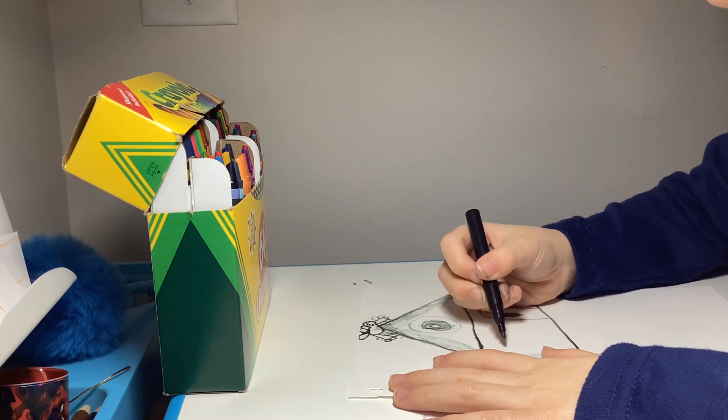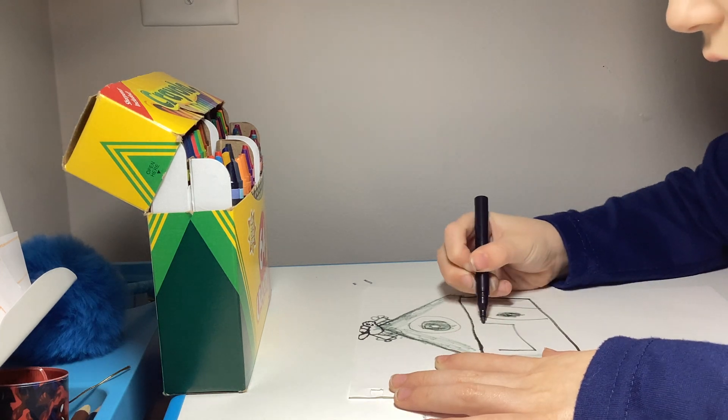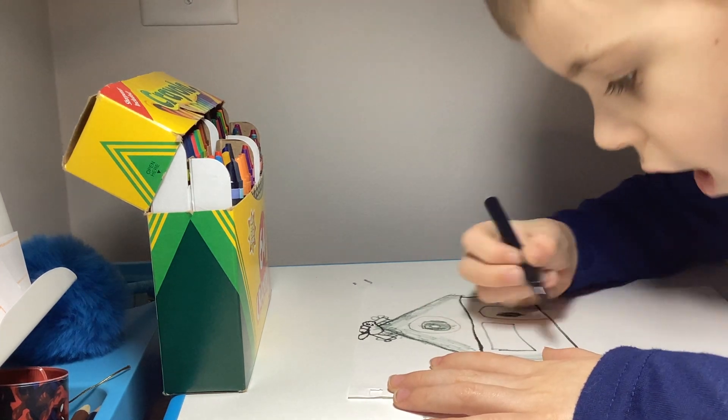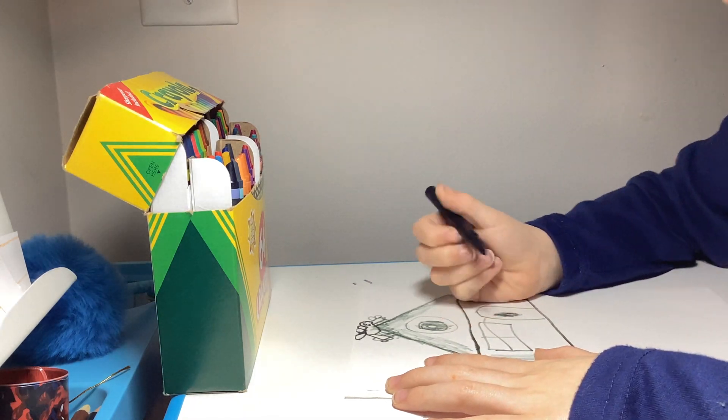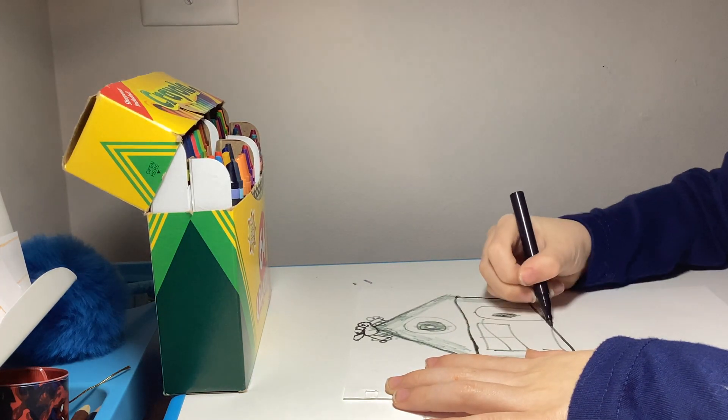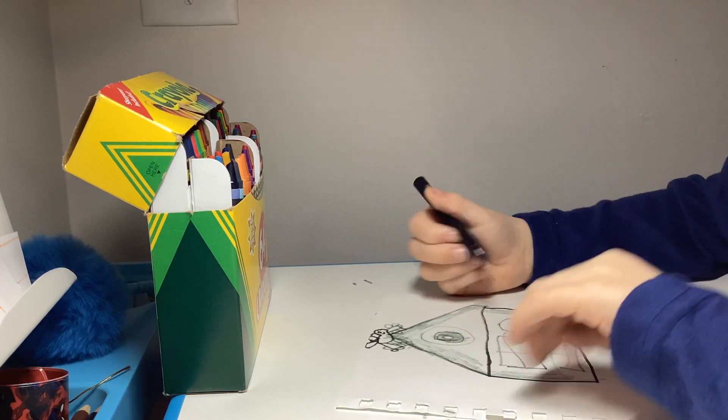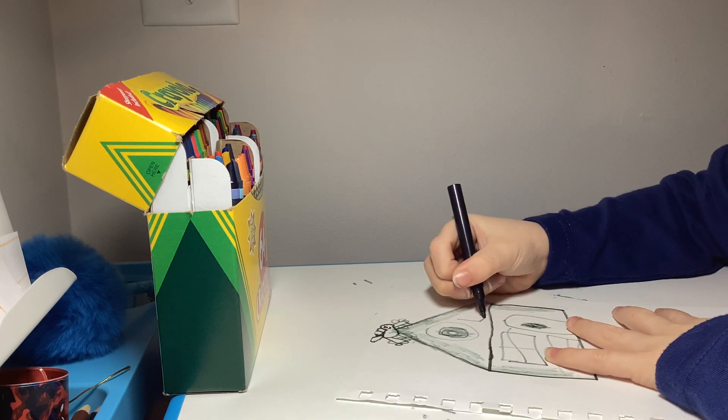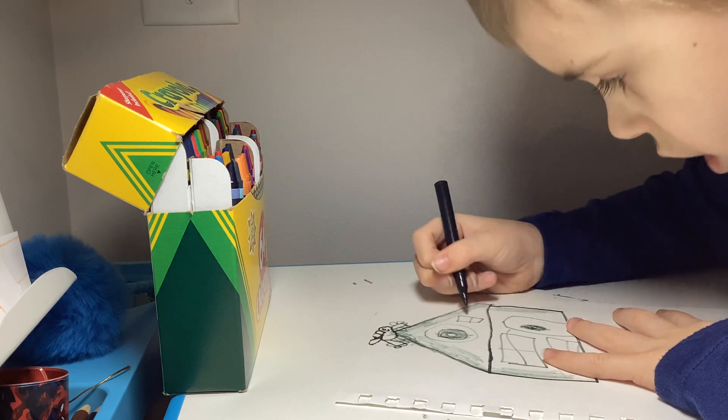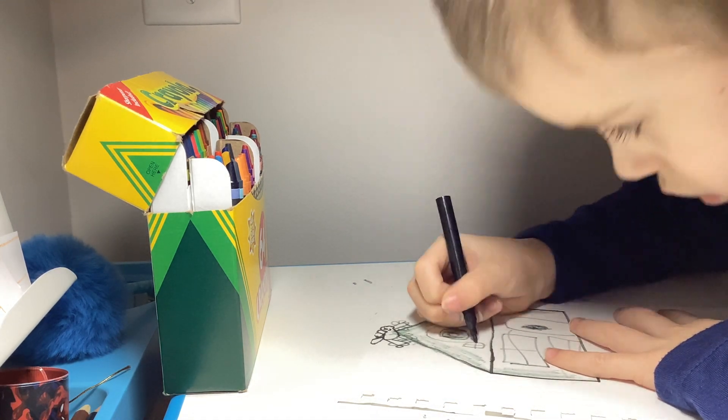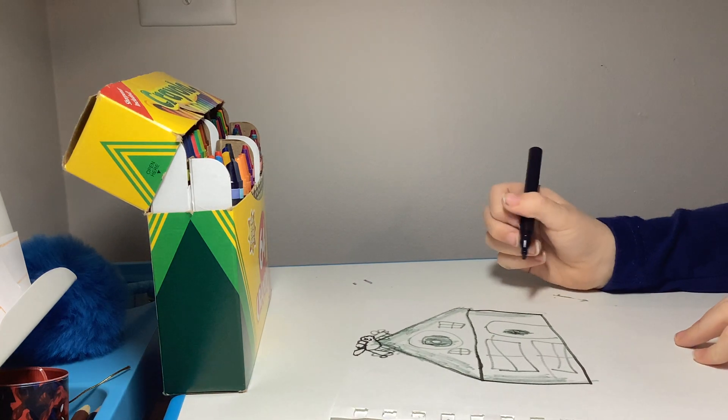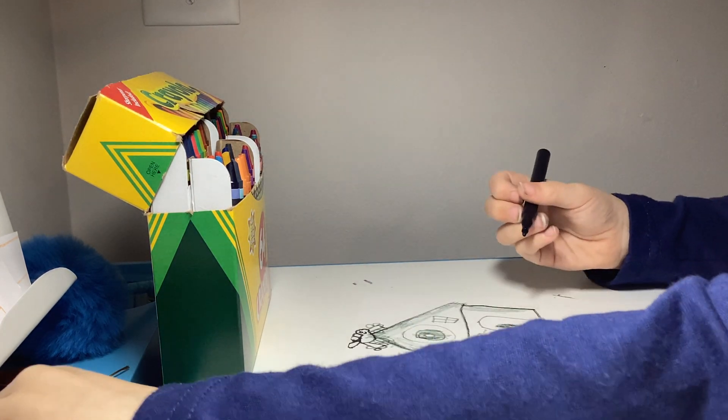And then you're going to draw some more windows. So you're going to draw one big rectangle, then one more like that. Then one, two lines. Then same thing here, one, two, rectangle, two lines. Then one more here which is actually a rectangle like that, then another one. There we go. And you're done, time to color.